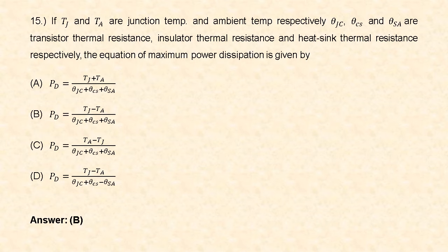Next question: T_j and T_a are junction temperature and ambient temperature respectively. θ_JC, θ_CS, and θ_SA are transistor thermal resistance, insulator thermal resistance, and heat sink thermal resistance respectively. The power dissipation equation is given by P = (T_j − T_a) / (θ_JC + θ_CS + θ_SA). So option B is correct.